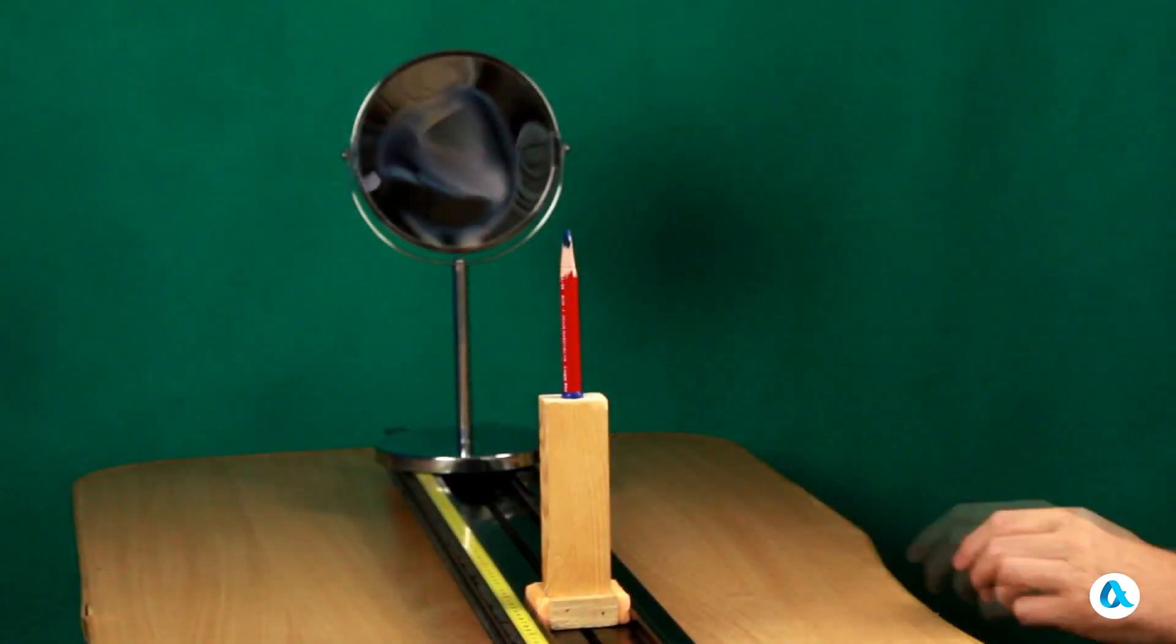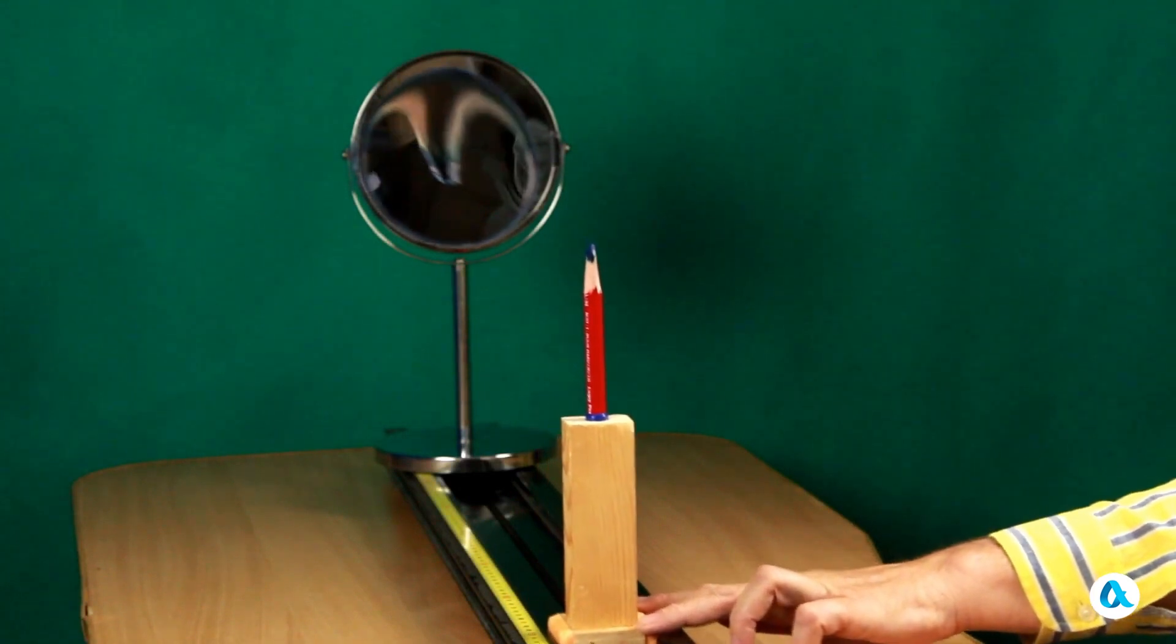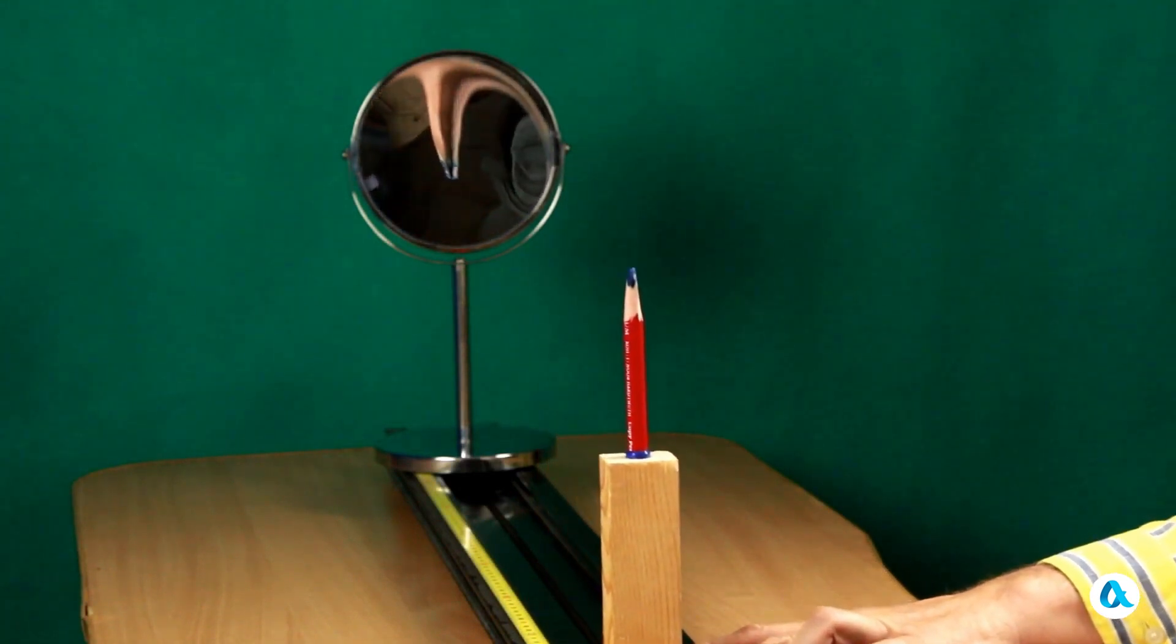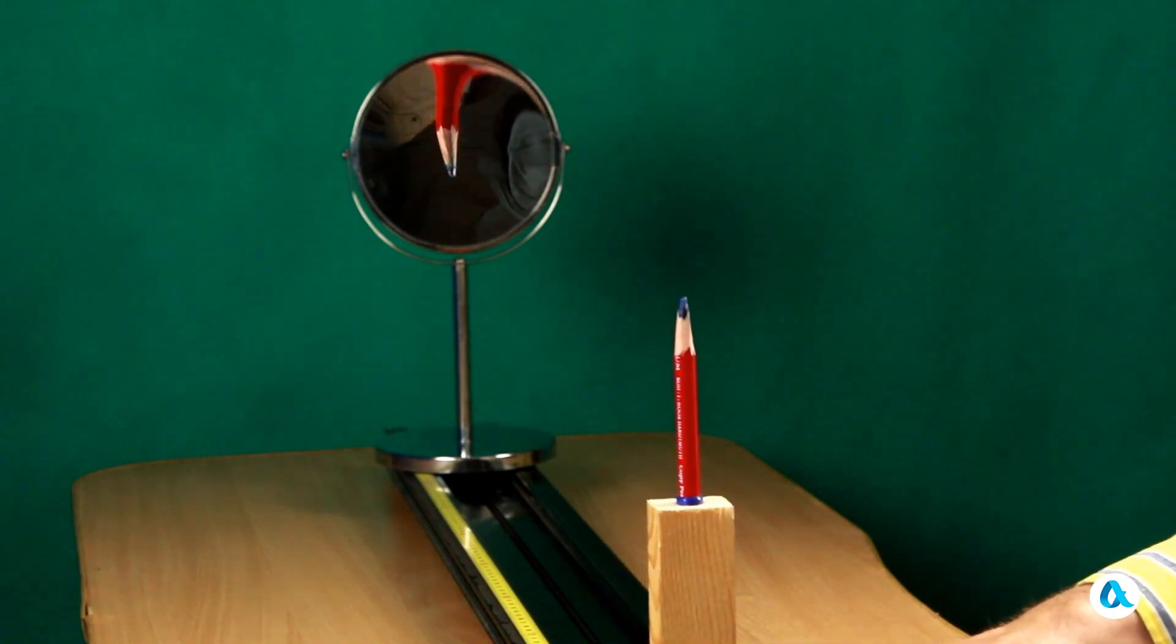Let's carry out a corresponding experiment. I shift the object away from the mirror and a flipped image emerges in it. We believe that this image is located behind the mirror, but in actuality it is situated in front of the mirror. And I will demonstrate it at this moment.